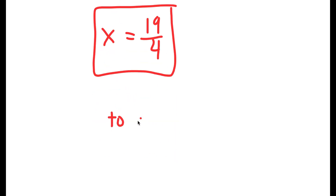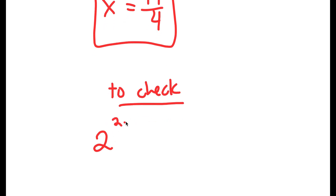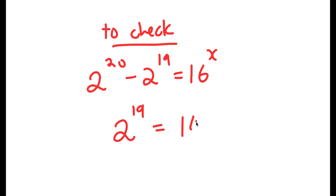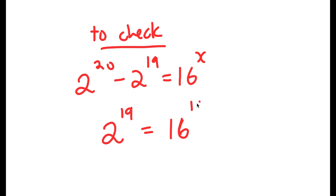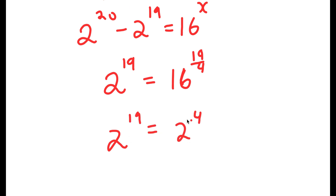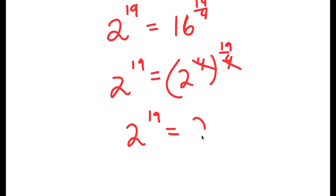To check, my original equation was 2 to the power of 20 minus 2 to the power of 19 is equal to 16 to the power of x. We already know that 2 to the power of 20 minus 2 to the power of 19 equals 2 to the power of 19. So we get 2 to the power of 19 is equal to 16 to the power of 19 over 4. Since 16 equals 2 to the power of 4, we have 2 to the power of 4 to the power of 19 over 4, and the 4s cancel, giving 2 to the power of 19 equals 2 to the power of 19. Verified.